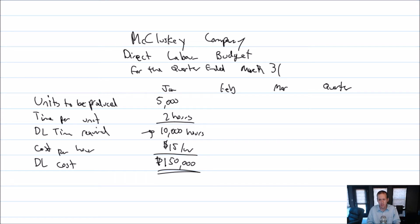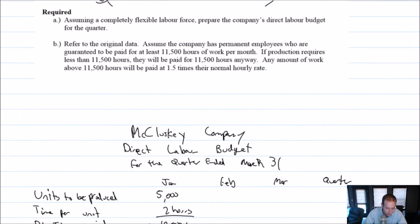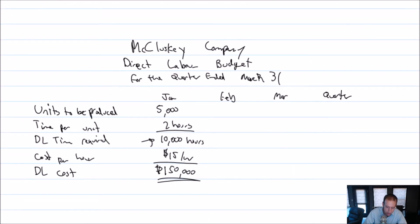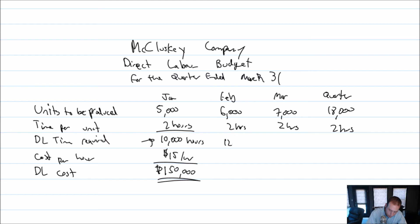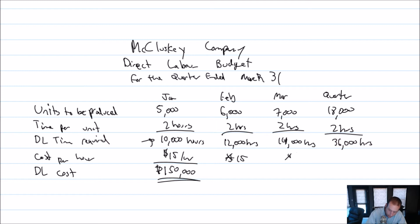I thought this was going to be really fast, but let's continue. We'll do February and March a lot quicker. February: 6,000 units; March: 7,000 units; and for the quarter: 18,000 units. Two hours each: 6,000 times two is 12,000 hours; 7,000 times two is 14,000 hours for March; and 18,000 times two is 36,000 hours for the quarter.